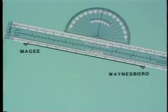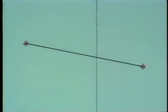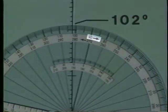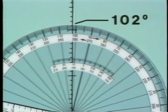The straight edge portion of the plotter is used to draw a line connecting the two airports — this is referred to as a direct route. To measure the true course, select the line of longitude close to the midpoint of the route, then align the straight edge with your route and place the small hole over the longitude line. Read the true course where the line of longitude crosses the protractor, using the scale with the arrow pointing in your direction of travel. In this example, the true course is 102 degrees.